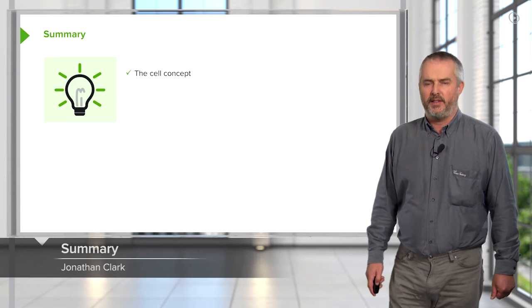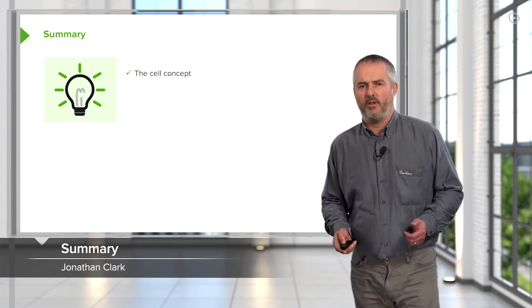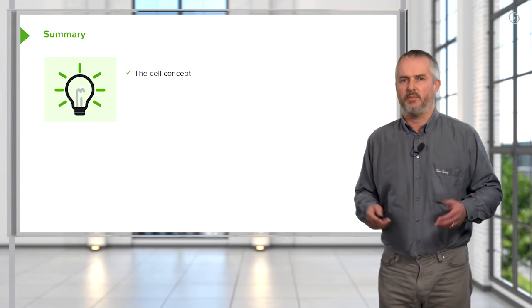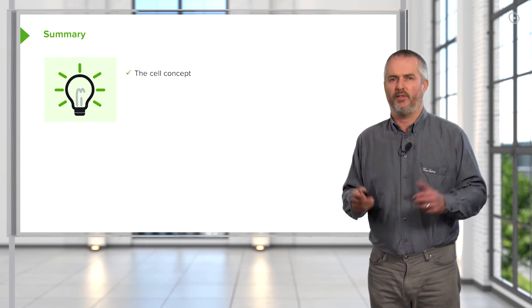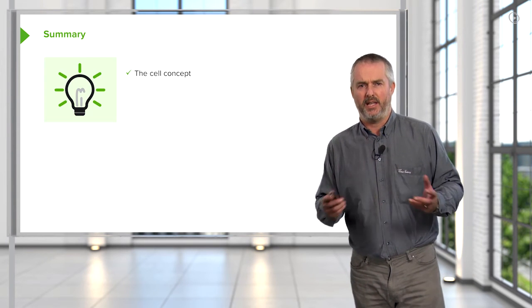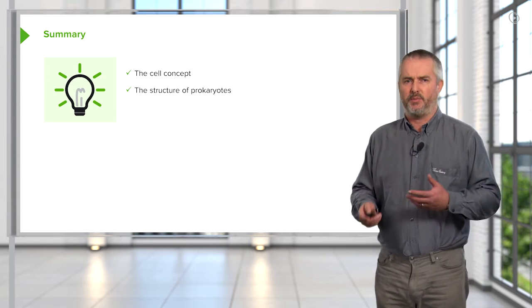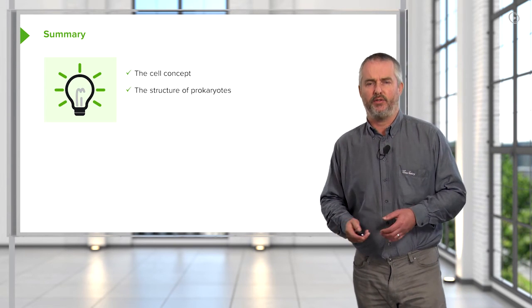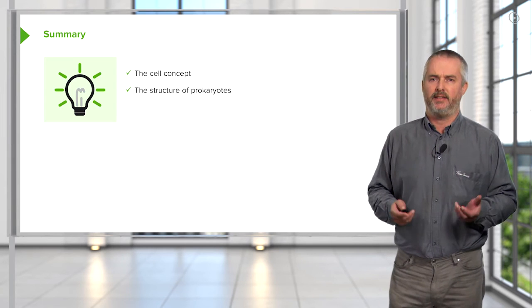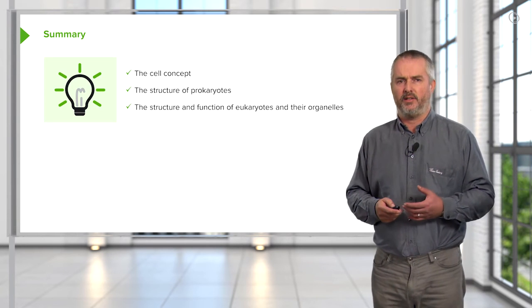So to sum up this particular part of the course, we've looked at the cell concept and the fact that all organisms are made of cells and the amazing figure of 50 trillion cells that make up a human body. We've also talked about the difference between prokaryotes, the bacterial cells, simpler cells, and the eukaryotes, and those are the types of cells that make up the human body.